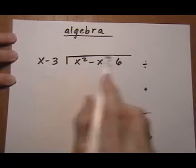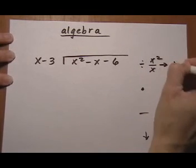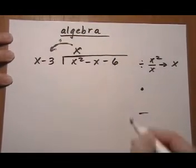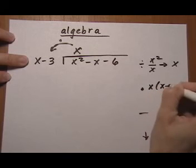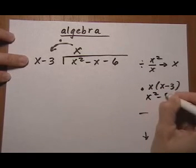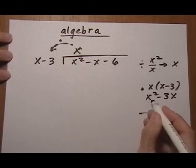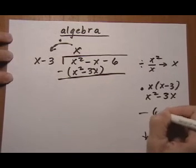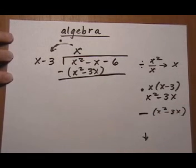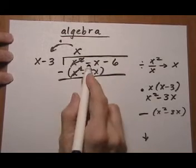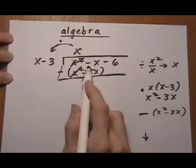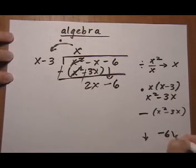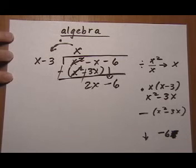We divide first term by first term, x squared over x, which gives us an x. We take that answer and put it on top. Then we're going to multiply, so we've got to distribute x times x minus 3. And x times x minus 3 is x squared minus 3x. We're going to take this answer and subtract it right here. So that gets subtracted. And x squared minus x goes away. Minus x, take away a minus 3, add the opposite. Minus plus 3, so that gives us 2x. Bring down the minus 6.